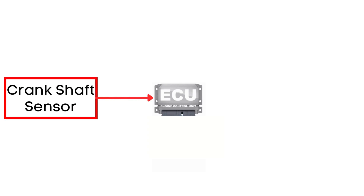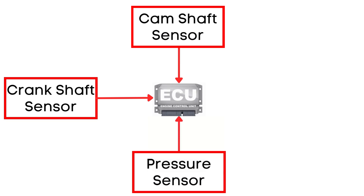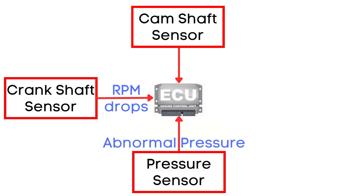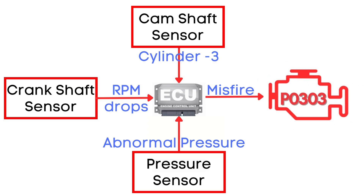Now let's dive into why P0303 gets triggered. The Engine Control Unit, or ECU, monitors the signals from the Crankshaft Position Sensor, Camshaft Position Sensor, and Cylinder Pressure Sensor. These sensors provide real-time data about your engine's performance. When a misfire occurs, it causes the engine's RPM to drop abruptly and the pressure inside the cylinder becomes abnormal. This sudden change in signals is what the ECU reads as a misfire. The Camshaft Position Sensor helps the ECU determine which specific cylinder is experiencing the misfire.